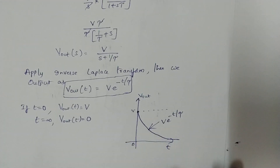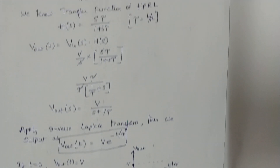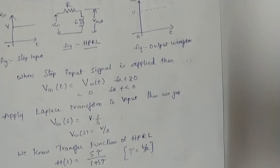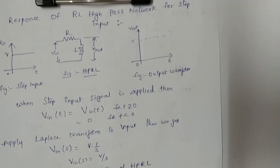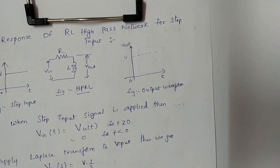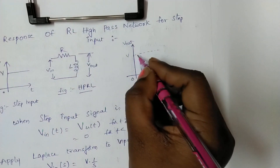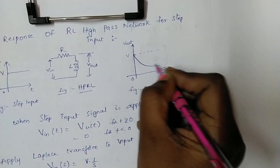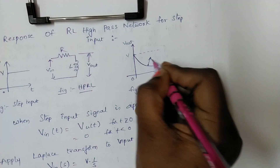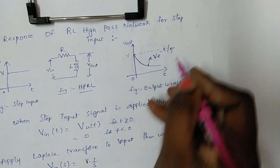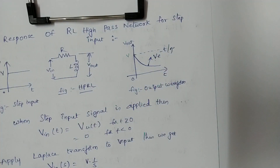So, we have seen the response of the RL high-pass network for step input. We get the output waveform as a decaying exponential, and the output equation is V · e^(−t/τ), where τ = L/R. Thank you.